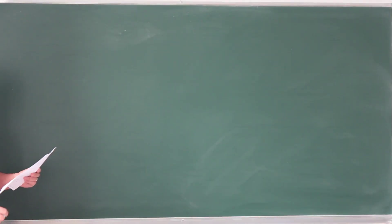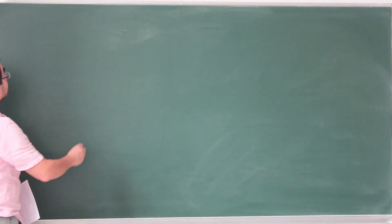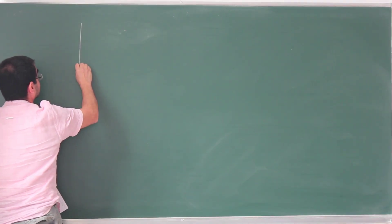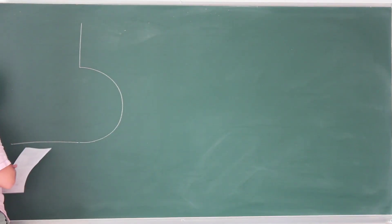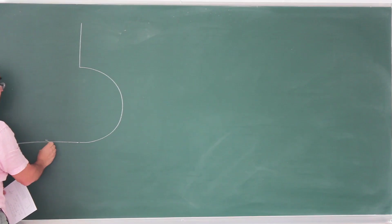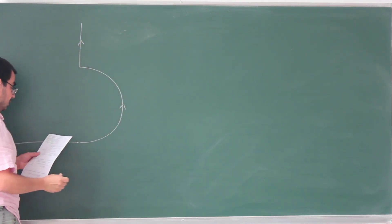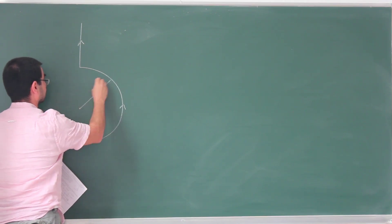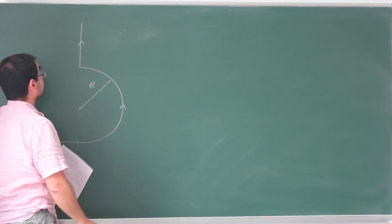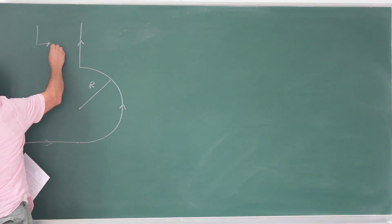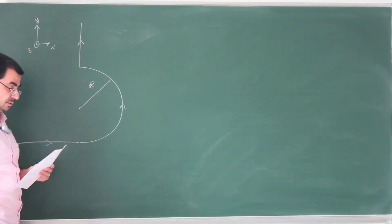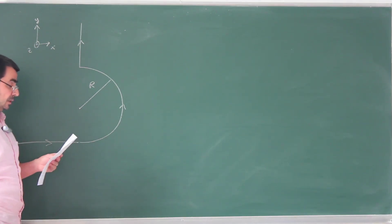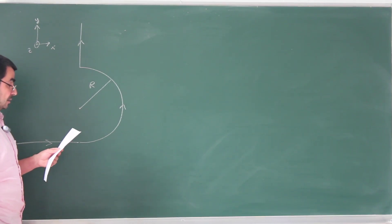This is the second classical problem from the second midterm of 2024 of X106. In this problem, we have a wire that's twisted in a particular way: there's a straight section, a semicircle, and then a straight section going this way. We have a current moving in this direction. The radius of this semicircle is capital R. We are given a coordinate system — X, Y, and Z is pointing towards us — a right-hand coordinate system. This whole wire is in the XY plane, carrying some current I.